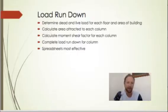The first thing we need to do is determine the dead and live loads of each floor of the building. This is simply done by looking at the architectural drawings—is it an apartment building or an office building?—and then put in the right dead and live loads for each floor. Next we need to calculate the area attracted to each column.